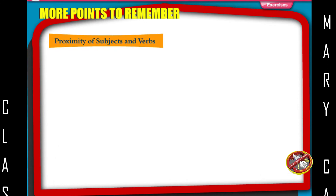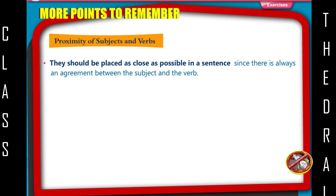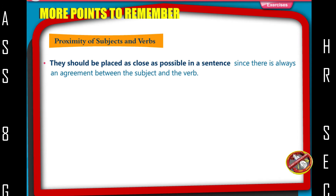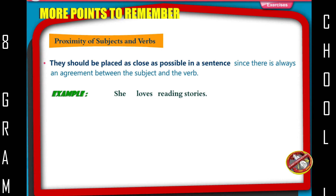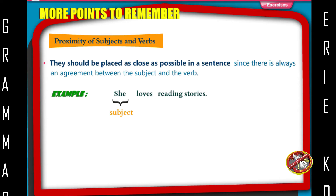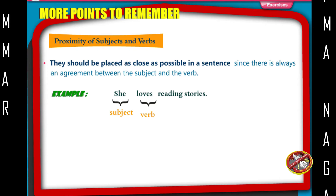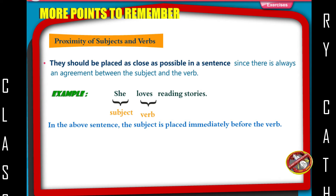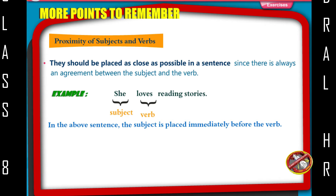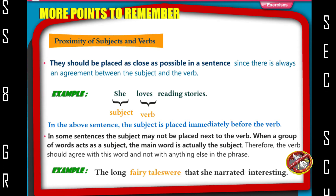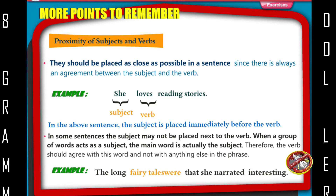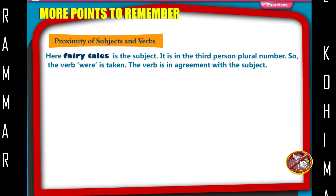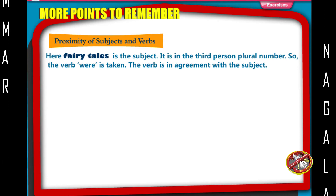More points to remember. Proximity of subjects and verbs: they should be placed as close as possible in a sentence, since there is always an agreement between the subject and the verb. Example: She loves reading stories — 'She' is the subject, 'loves' is the verb. In the above sentence, the subject is placed immediately before the verb. In some sentences, the subject may not be placed next to the verb. When a group of words acts as a subject, the main word is actually the subject. Therefore, the verb should agree with this word and not with anything else in the phrase. Example: The long fairy tales that she narrated were interesting. Here, 'fairy tales' is the subject — it is in the third person plural, so the verb 'were' is taken.